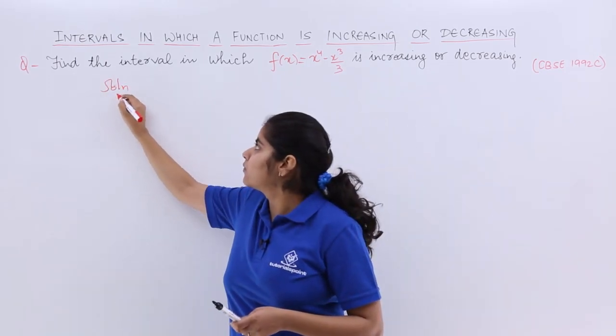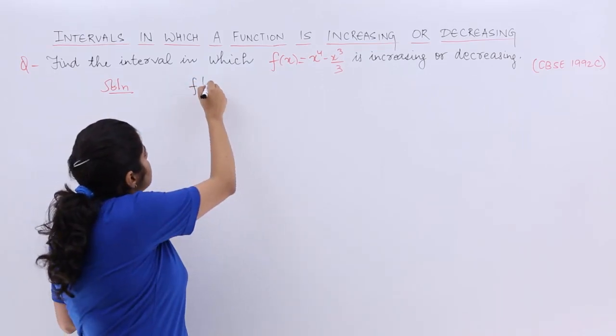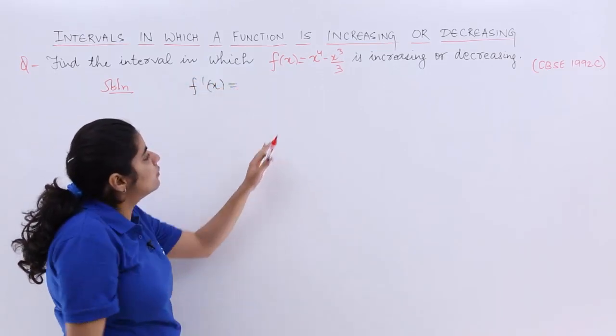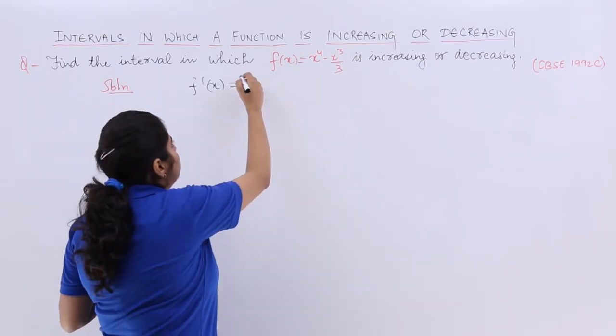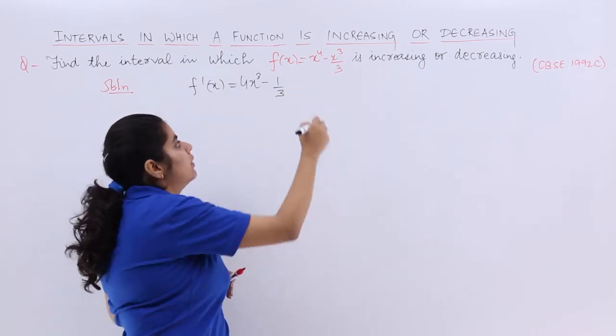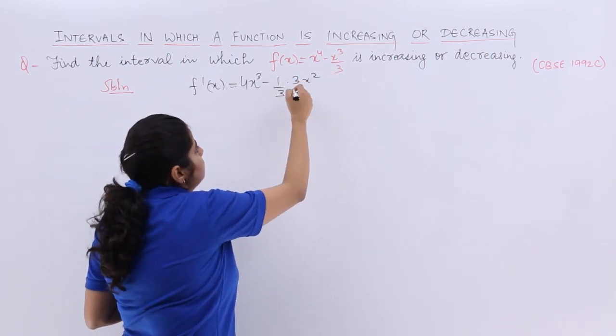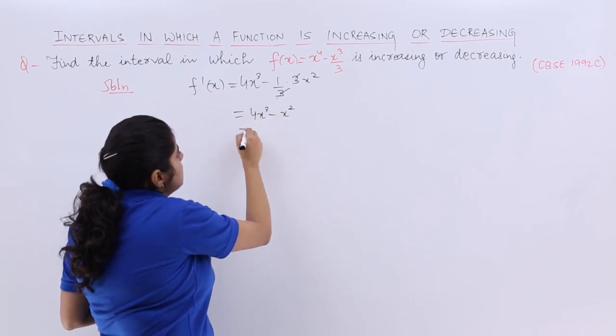I write solution and our procedure is to find f'(x). So what is f'(x)? Nothing but the derivative of this thing. So it is x^4 derivative 4x^3 minus 1/3 coming out. x^3 derivative 3x^2. 3 and 3 getting cancelled.